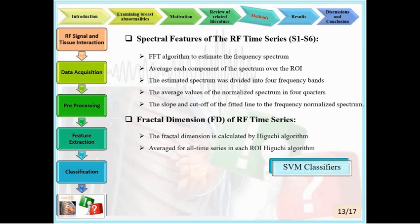SVM was used as the classifier, identified as the best for classifying healthy and cancerous tissues. Five different SVM types available in MATLAB 2020 were used: linear, quadratic, cubic, fine Gaussian, and medium Gaussian, to classify each ROI. The leave-one-out method was used for training and testing. The average classification accuracy based on the extracted features is reported in the next slide.